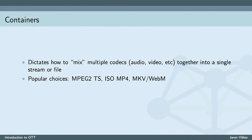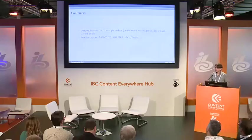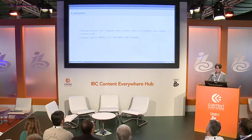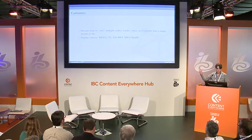Containers dictate how you can mix codecs together into a single stream or file. Some of the popular choices are MPEG-TS, which is often used for traditional broadcast, ISO MP4, which most people are familiar with, and MKV — also known as Matroska — which is a format enthusiasts use for things like Japanese series because it has excellent subtitle support and can contain almost anything. WebM is actually a subset of MKV. MP4 is a more straightforward choice and TS the more traditional choice, but there are others as well.